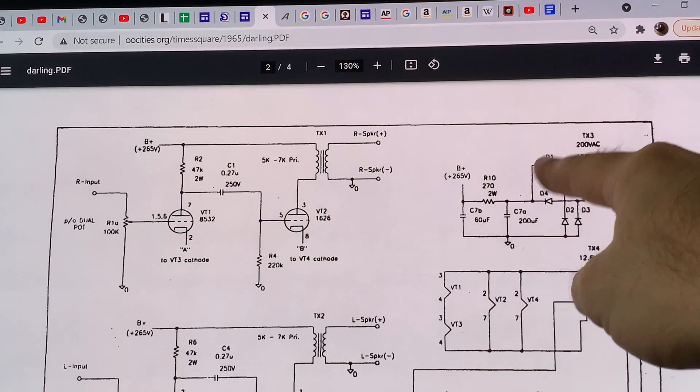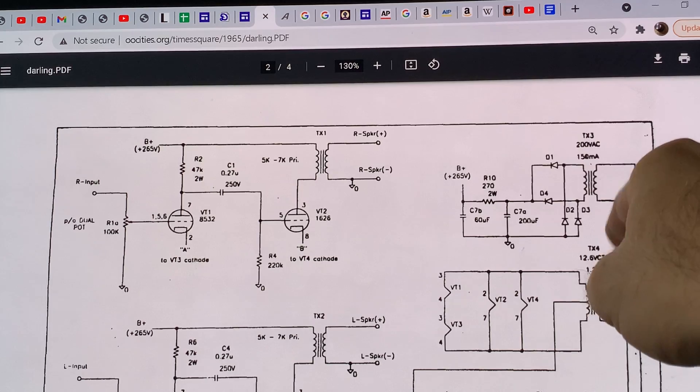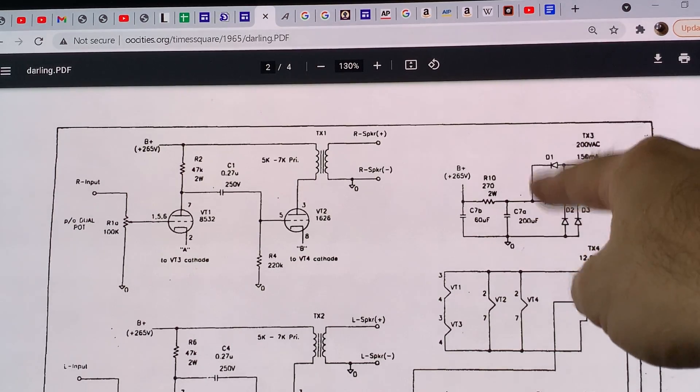All of the filaments are running from a single 12-volt secondary transformer. The input tubes are run in series. It also has a little power transformer, and he uses a Graetz bridge, not full wave, a Graetz bridge.